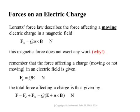In electrostatics, we established that the force on an electric charge in an electric field is F = QE, with positive charges drifting in the direction of the field and negative charges drifting against it. Something similar happens when a charge is placed within a magnetic field, but the charge must be moving — this is one fundamental difference from electrostatics. Magnetic fields affect only moving charges, not static ones.